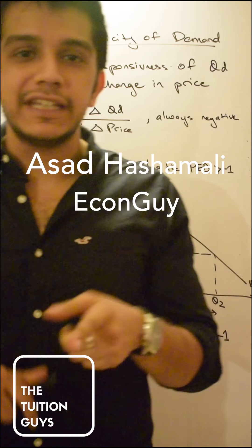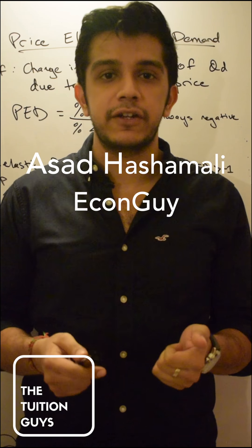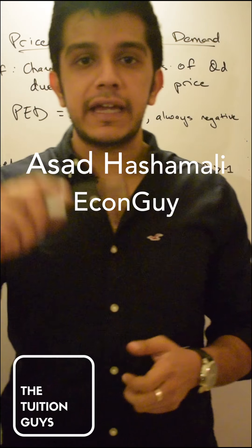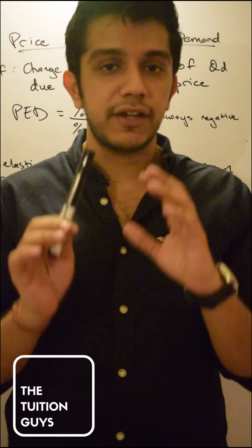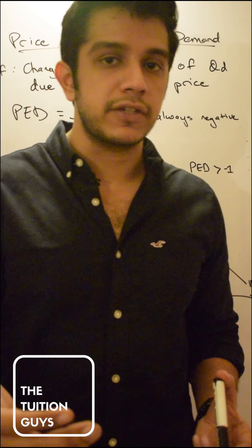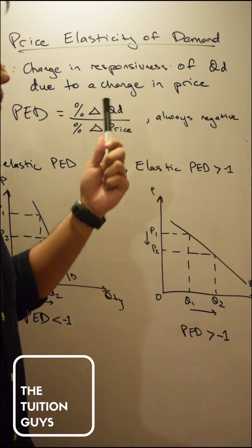What's going on guys, the friendly neighborhood econ guy here for O level economics. Last time we covered theory of demand, theory of supply, and the market equilibrium. Again, if you have questions feel free to ask us because without clearing those concepts you can't really move forward for the next chapter as well.